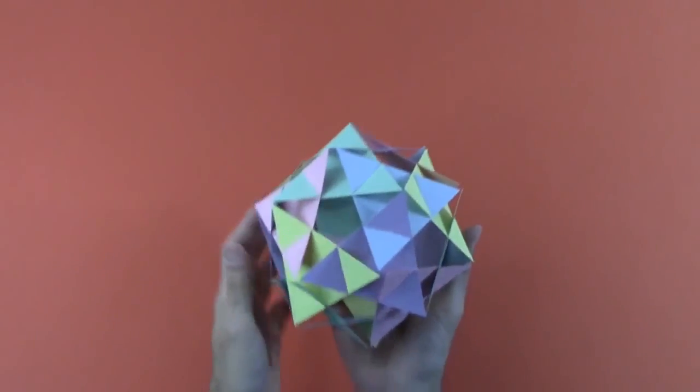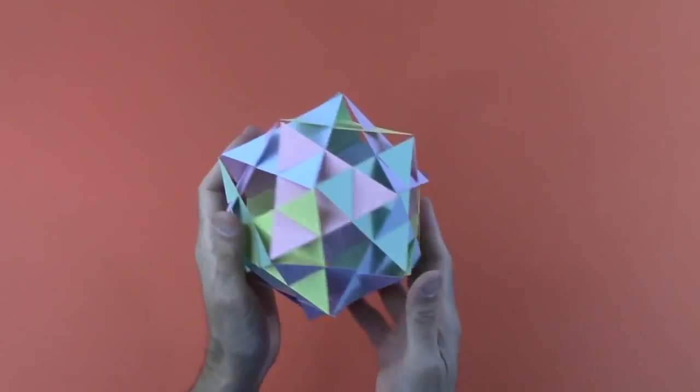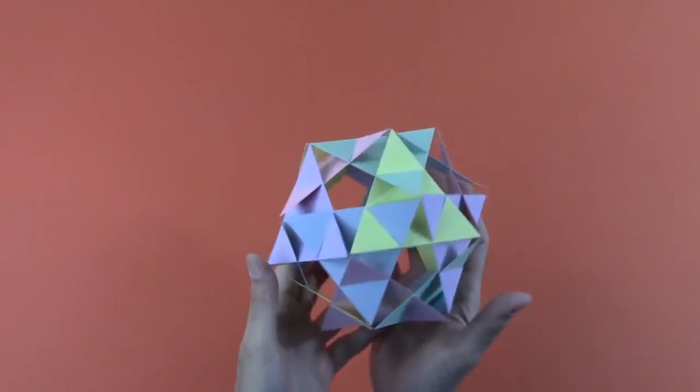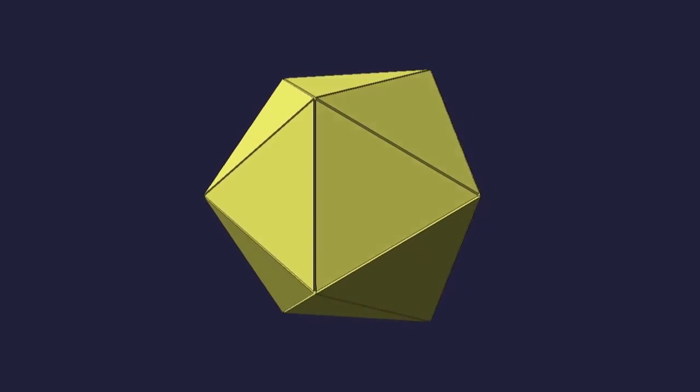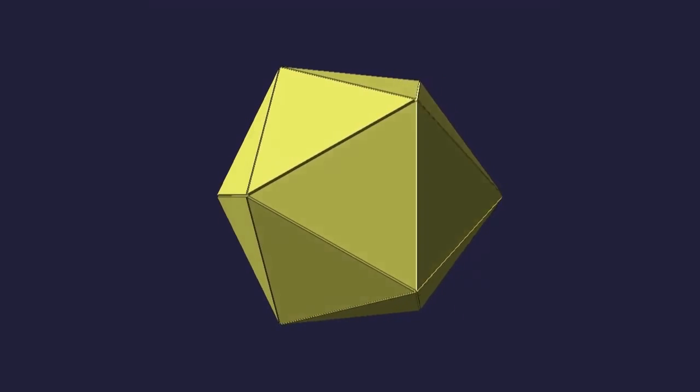The first one is made from 20 equilateral triangles of five different colors. To understand the underlying mathematics, start with a regular icosahedron. It consists of 20 triangles, five at each vertex.